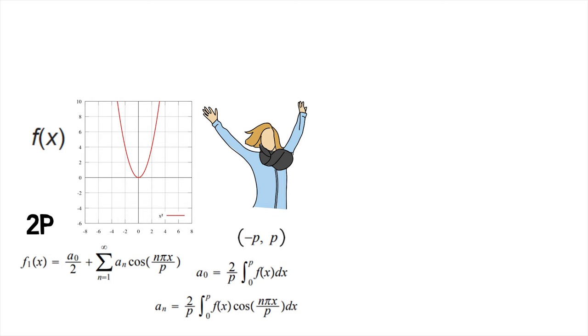and a_n equals 2 upon p into integral of f of x into cos of n pi x upon p dx from 0 to p. This is called the half-range cosine series of f of x.